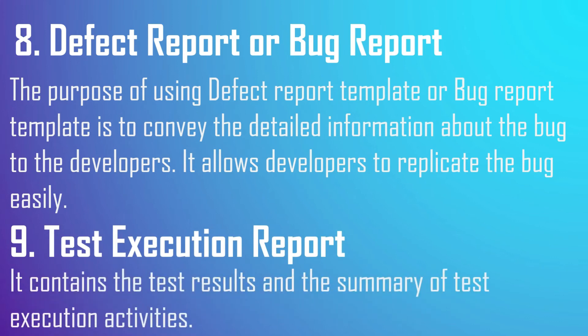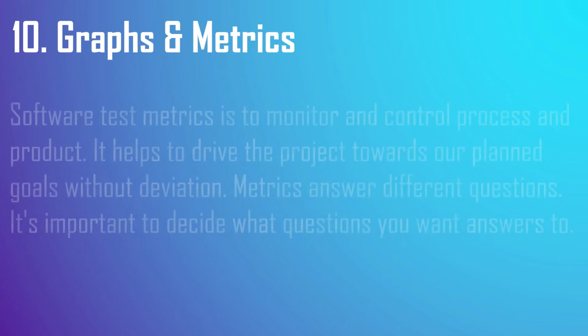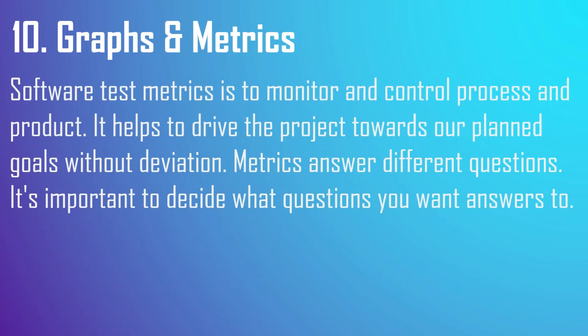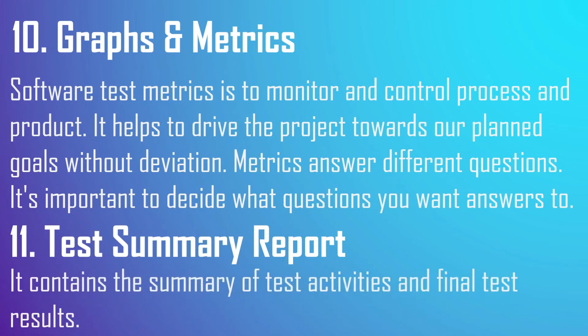Test execution report contains test results and a summary of test execution activities. Now, graphs and metrics — test metrics software is used to monitor and control the process and product. It helps drive the project towards our planned goals without deviation, answering various questions. It is important to decide what questions you want answers to.